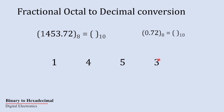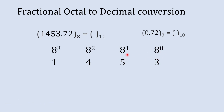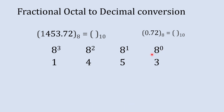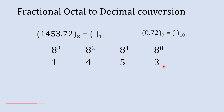We multiply the rightmost digit by 8 to the power 0, the next by 8 to the power 1, then 8 to the power 2, and then 8 to the power 3. The reason we multiply by powers of 8 and not 7, 5, or 10 is because this number is in the octal system, and the base of the octal number system is 8.